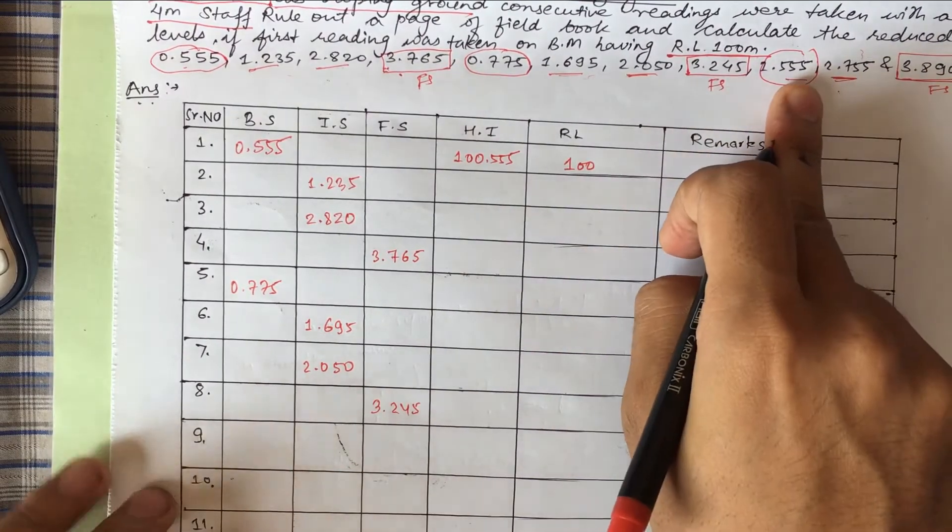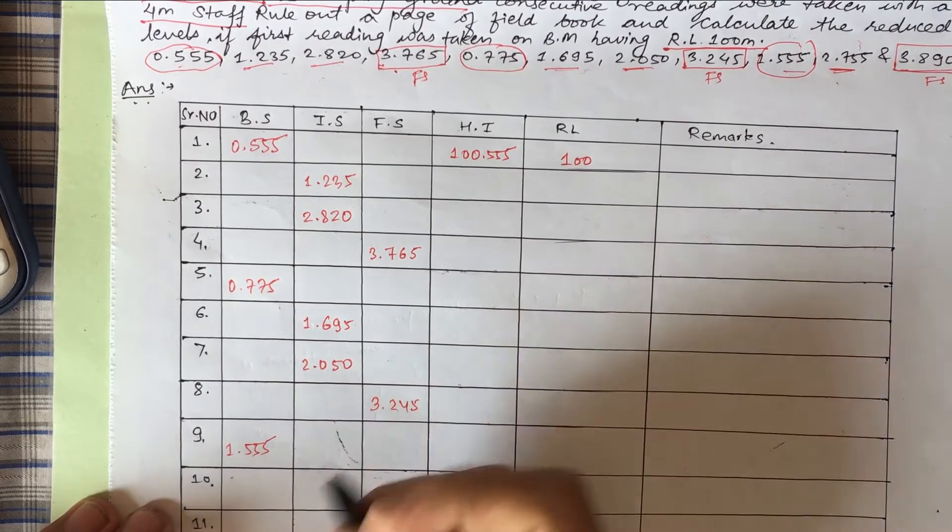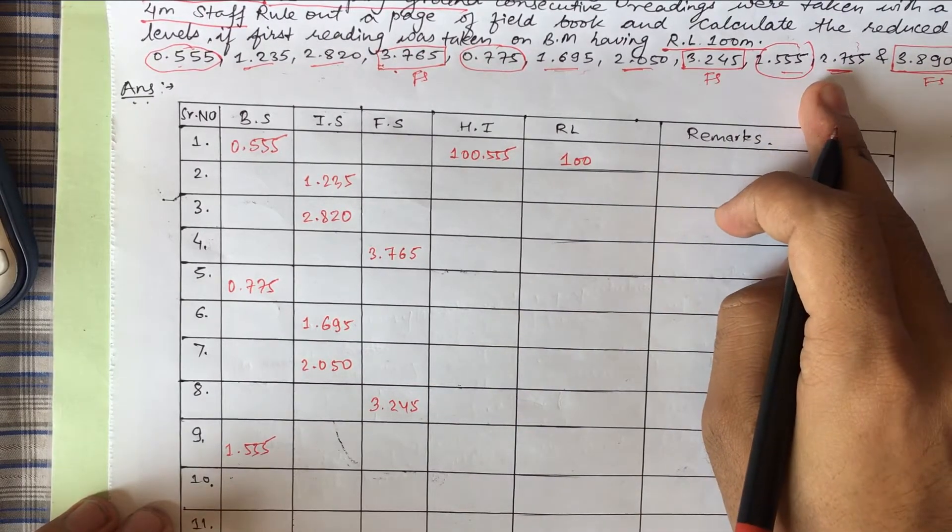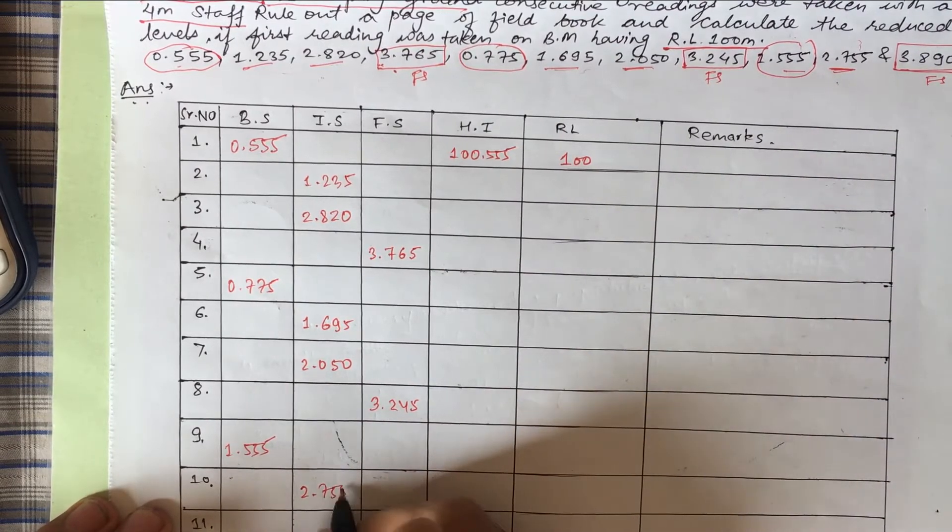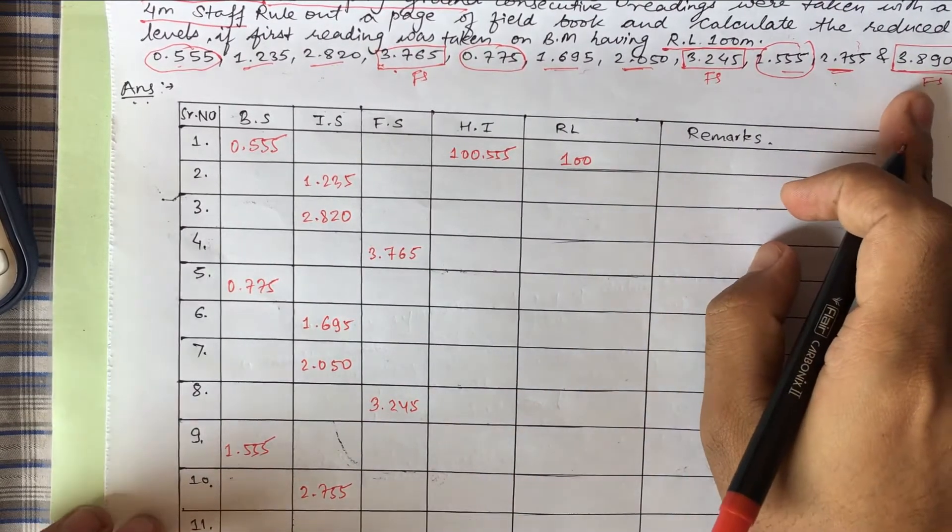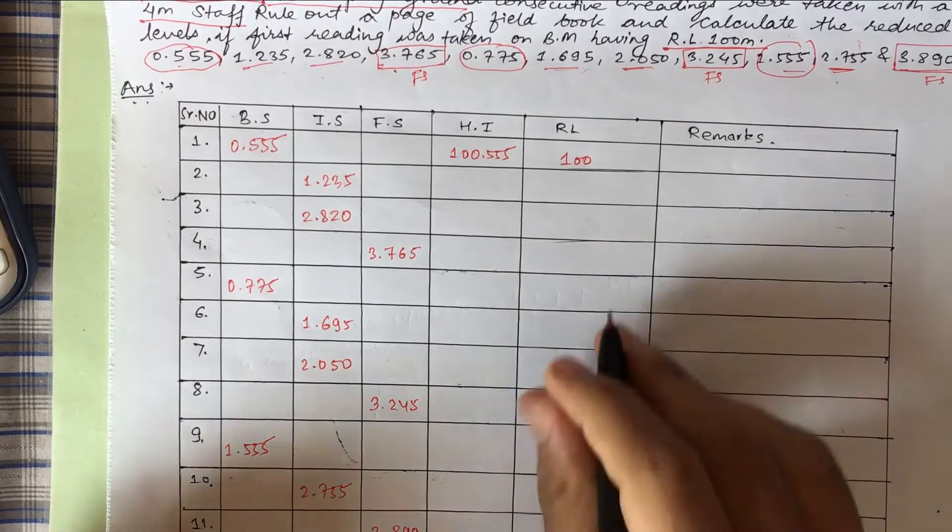After that, 2.050. Again this is FS, 3.245 we'll write here. Immediately after FS, that will be BS. 2.755 will be intermediate, and then the last point will be FS.